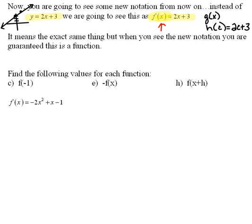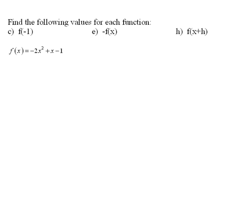All right, now, once we understand that and what the new notation is, now we're going to be able to evaluate some functions. So here we have a function. This is our generic one here, our pattern that we're going to be using. This says f of x equals negative 2x squared plus x minus 1.